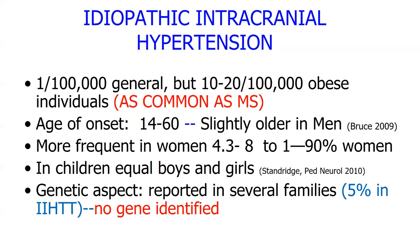IIH is somewhat rare at one per hundred thousand in the general population, but in people who are overweight or obese, it's 10 to 20 per hundred thousand — as common as multiple sclerosis. Yet far fewer people have heard of IIH. The age of onset ranges from about 14 to 60. Almost 90 percent of those affected are women, though in childhood it affects boys and girls equally.